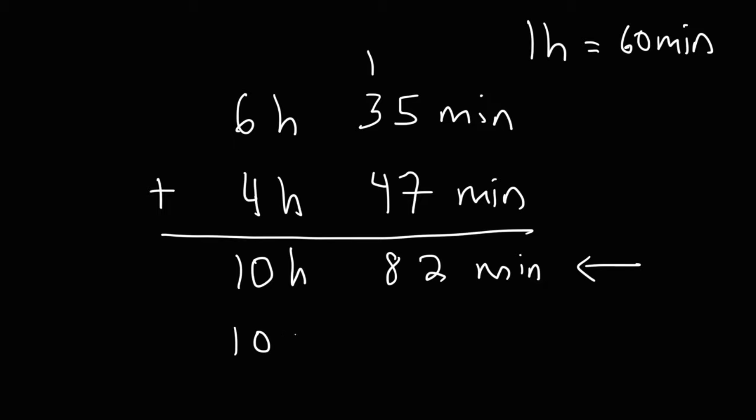So what I'm going to do is write it as 10 hours plus 60 minutes plus 22 minutes. Because if you subtract 82 by 60, you get 22. Now, I'm going to replace 60 minutes with an hour because they equal each other. So thus, we have 10 hours plus 1 hour plus 22 minutes.